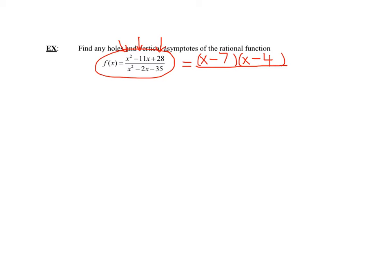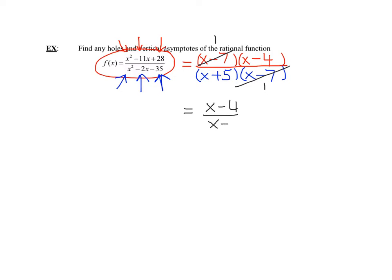Now we need to factor the denominator. The leading coefficient is one, so I'll have an x and an x. The signs are different since they multiply to a negative. I need two numbers that multiply to negative 35 and add to negative 2 — that's negative 7 and positive 5. Now I've fully factored it. Does anything reduce? Yes, the x minus 7 factors totally cancel, so the simplified function is f(x) equals x minus 4 over x plus 5, as long as x does not equal 7.